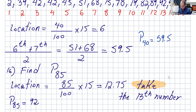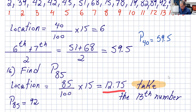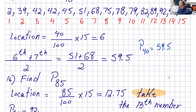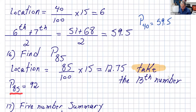There is another example: p85. The location is going to be 85 divided by 100 times 15, and you get 12.75. This is a decimal, so you take the 13th number. Please don't forget those two little details. The 13th number in the data is 92. So you write p85 equals 92.